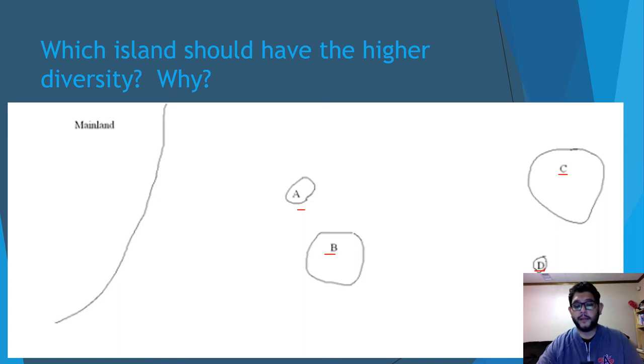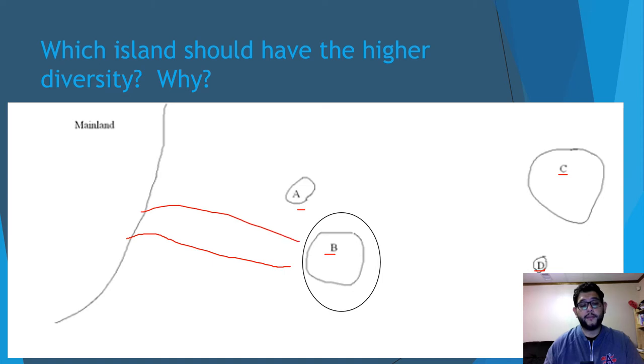Which one would it be? In this case, Island B, because this allows for the migration over from the mainland to be shorter than having to travel all the way out to the big island C. And even though the travel to Island A is much shorter, the problem is it may not have as many resources.